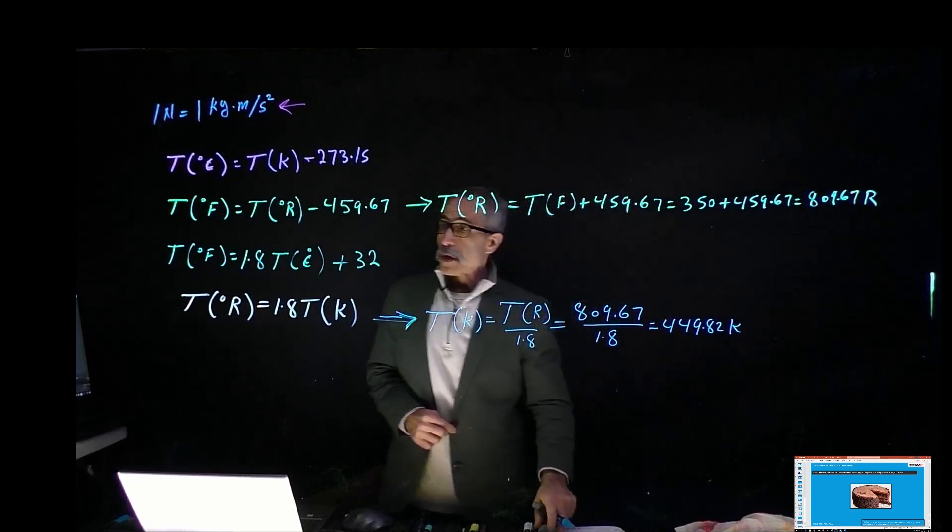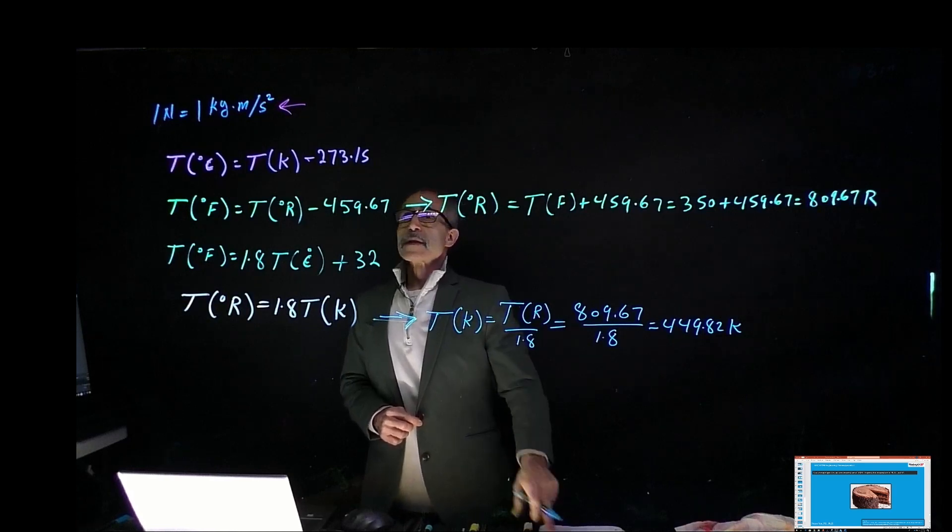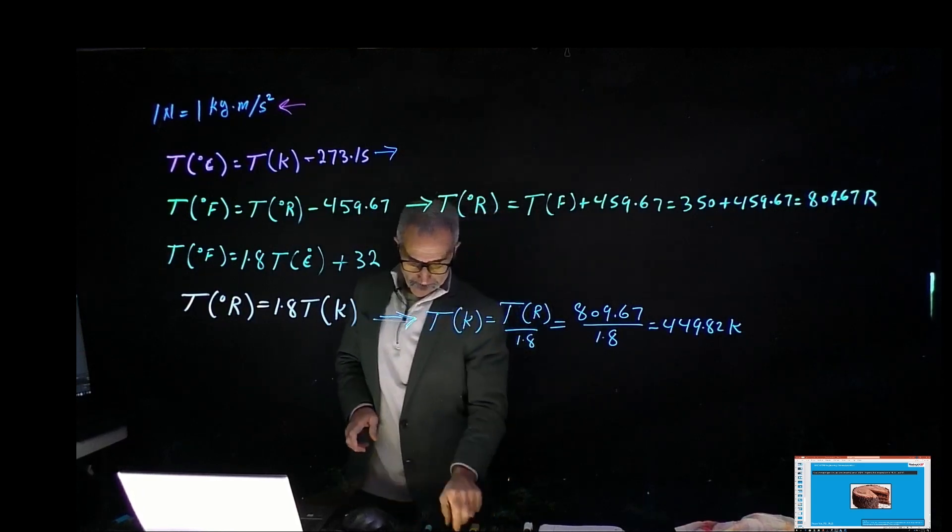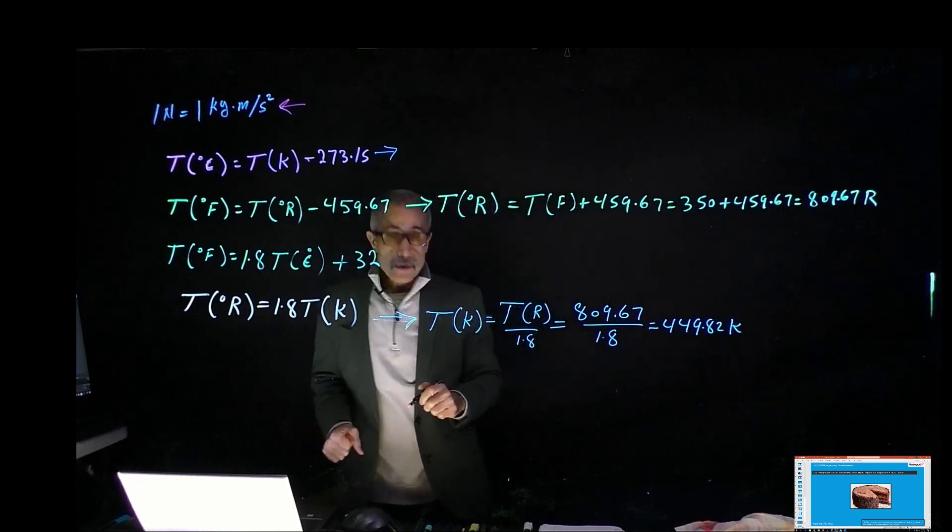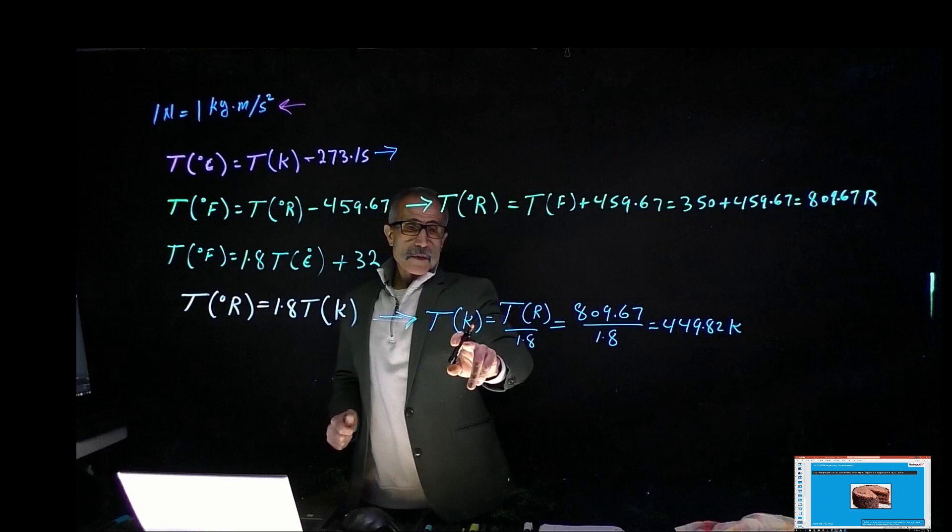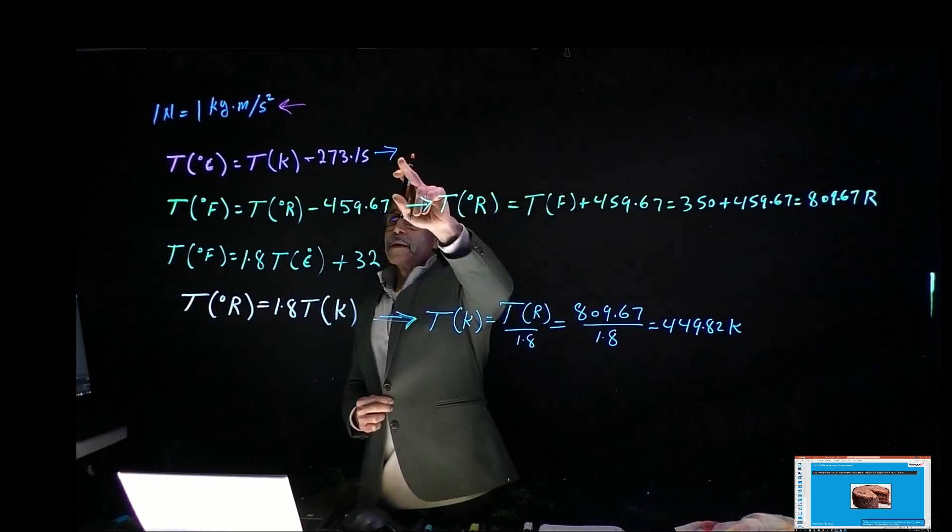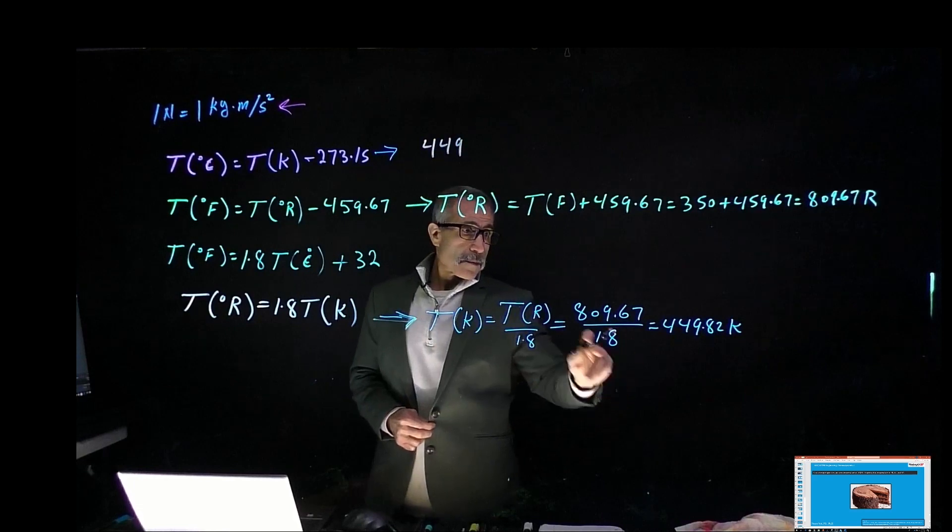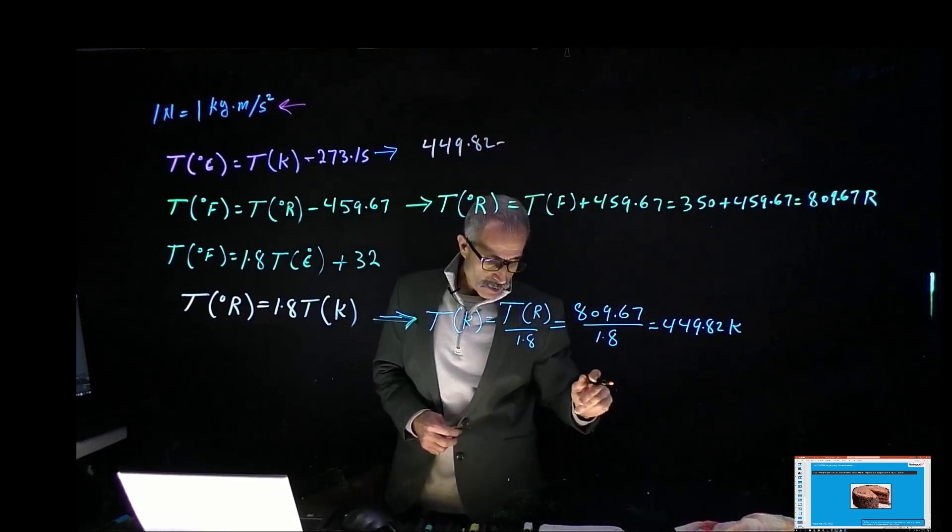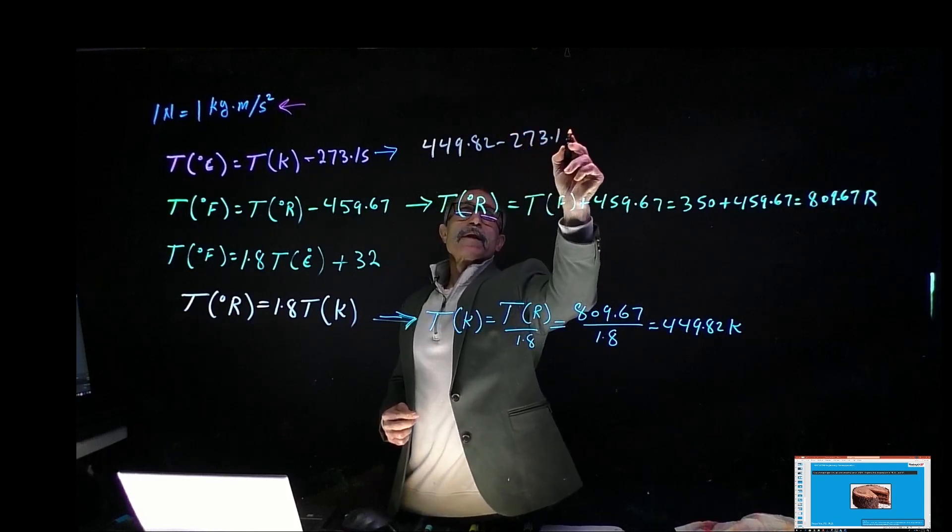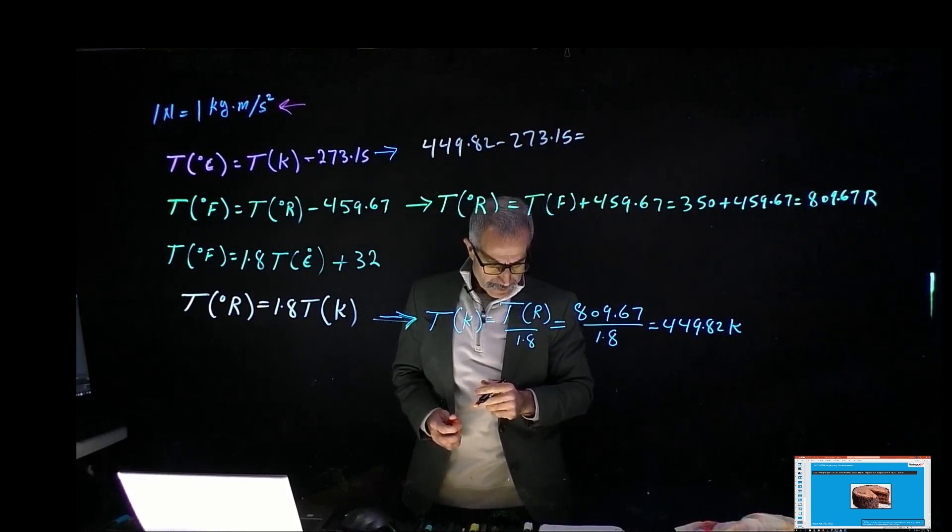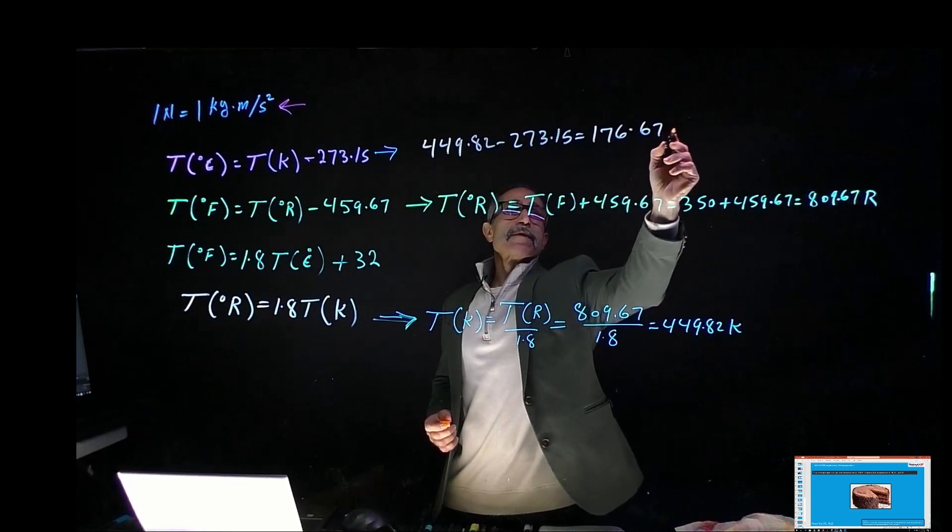Next we're going to want to know what's the T in Celsius, which equals T in Kelvin minus 273. We have T in Kelvin anyway, so that's going to be 449.82 minus 273.15, and that comes out to 176.67 Celsius.